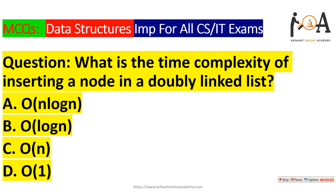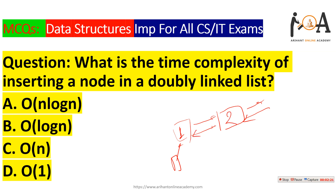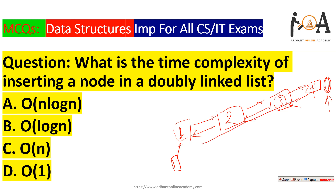The next question is: what is the time complexity of inserting a node in a doubly linked list? In a doubly linked list, the head points to the first node. From node 1 you can move to node 2, and from node 2 you can move to node 3 or back to node 1. Similarly from node 3 you can move to node 4 or back to node 2. If we want to add a node in the worst case — at the last position — we have to traverse every node, so the time complexity is O(n).